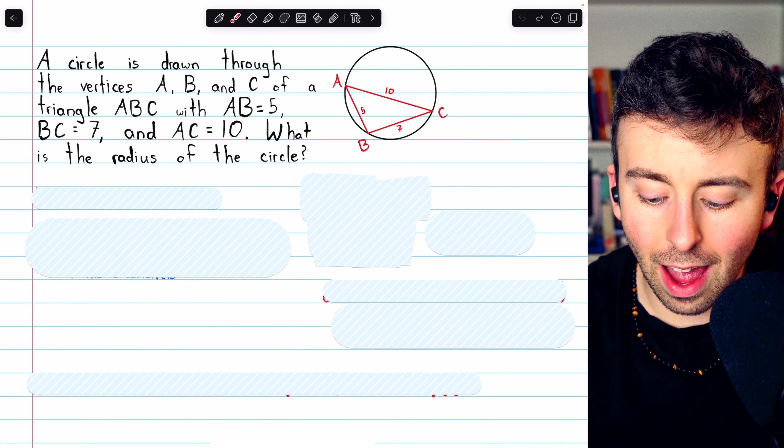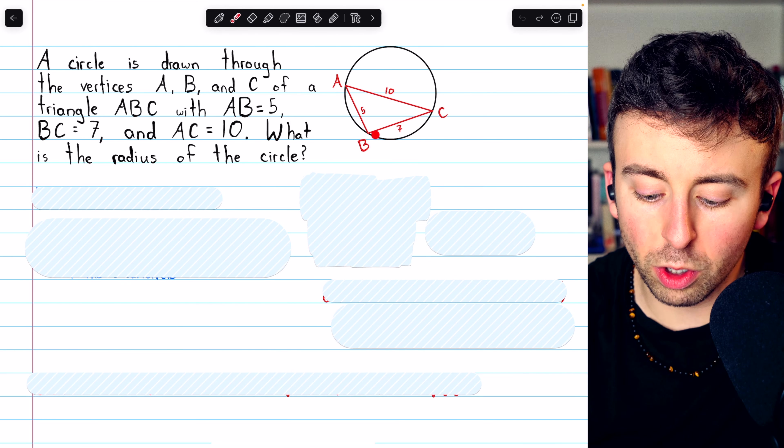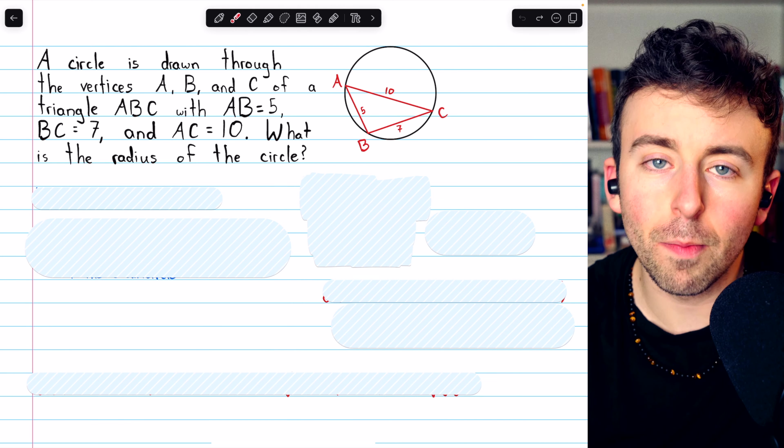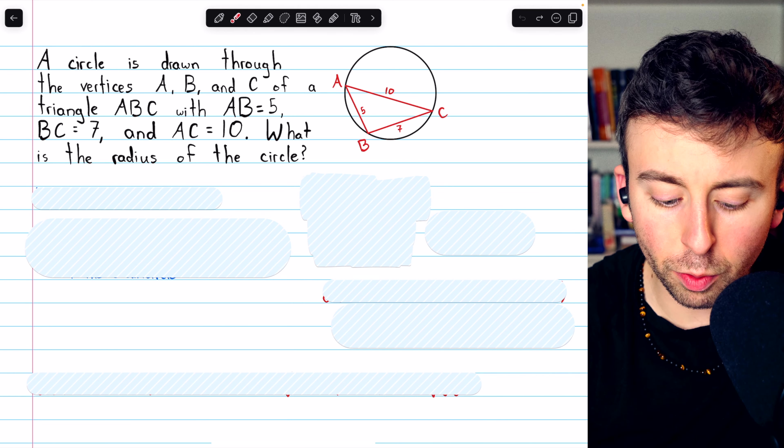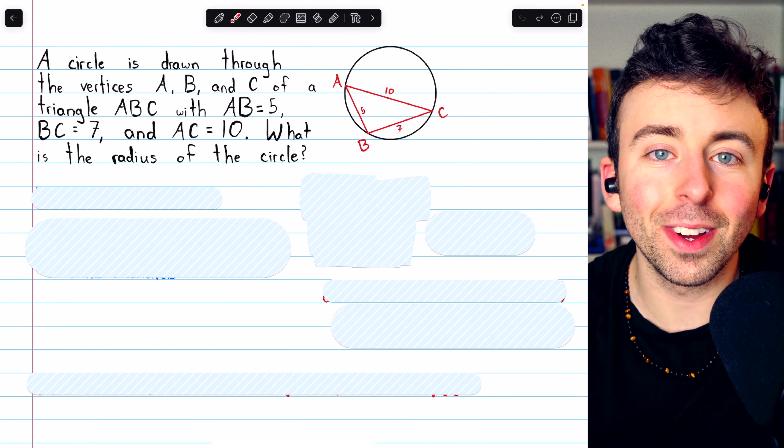Just from knowing the sides of this triangle, which is circumscribed by the circle, we want to find the radius of the circle.